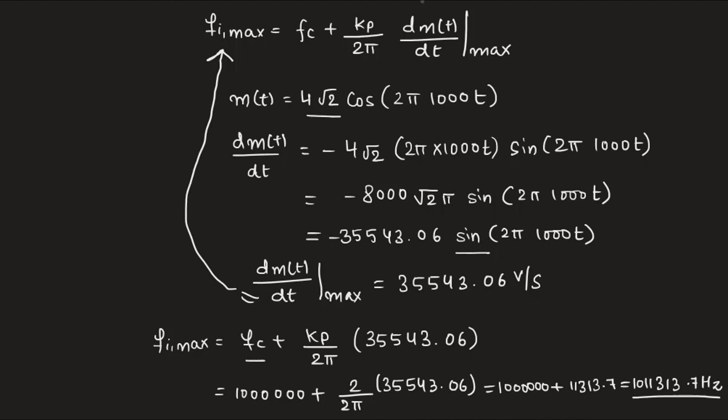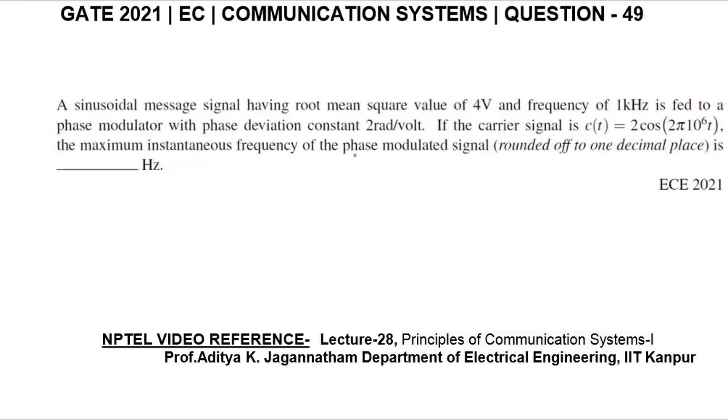Which is the final answer. So the maximum instantaneous frequency of the phase modulated signal rounded off to 1 decimal place is 1,011,313.7 Hz.